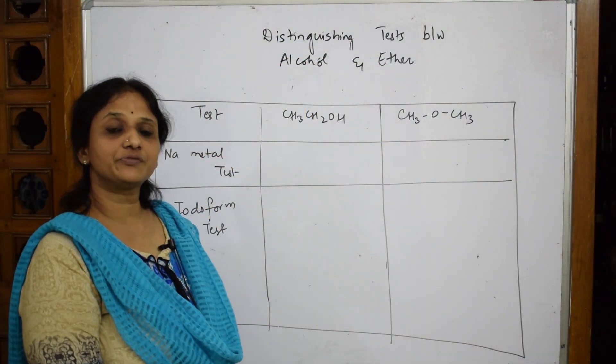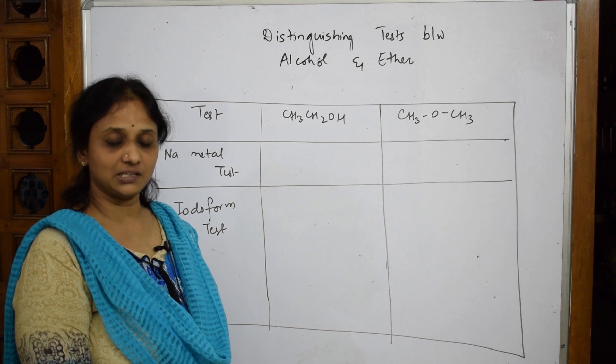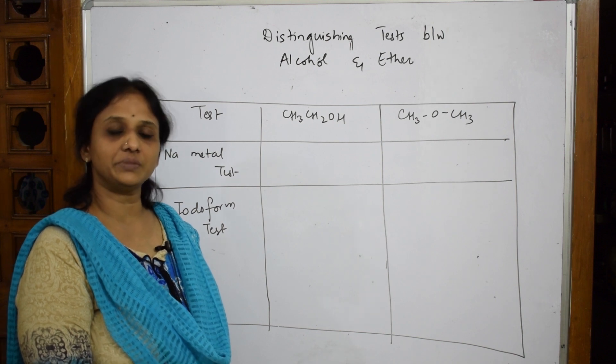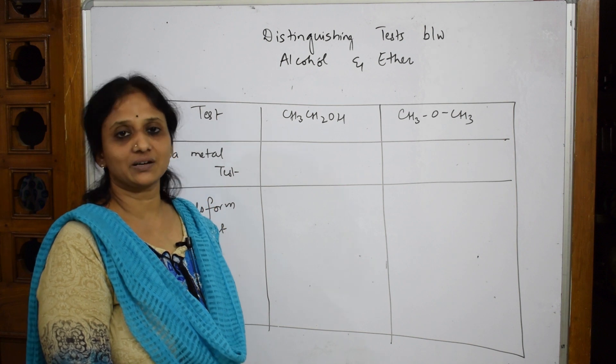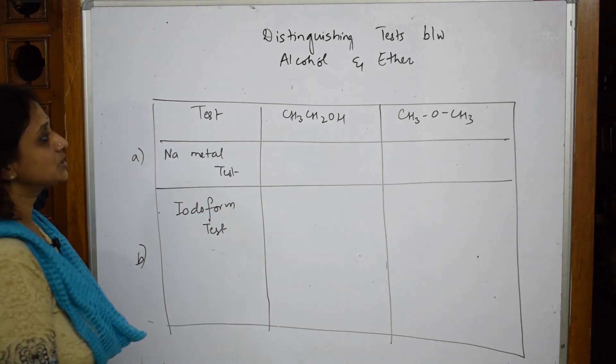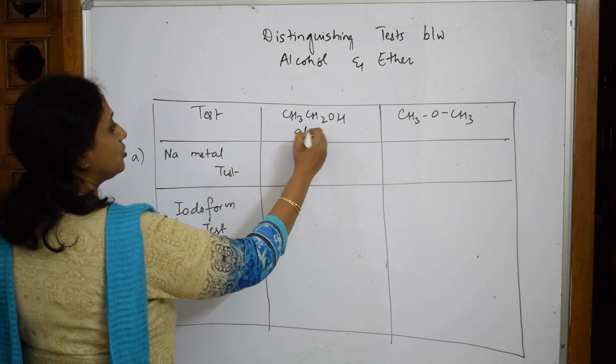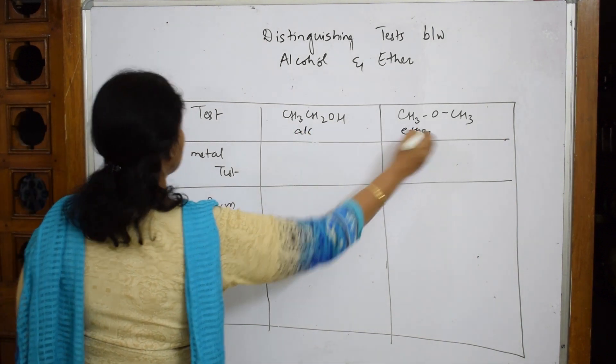Now let us come back and see one more distinguishing test between alcohols and ethers. I'm trying to show you all the different combination distinguishing tests, so please keep noting in your book and keep practicing. When I have to generally speak about the distinguishing test between an alcohol and an ether, the first important test is the sodium metal test.